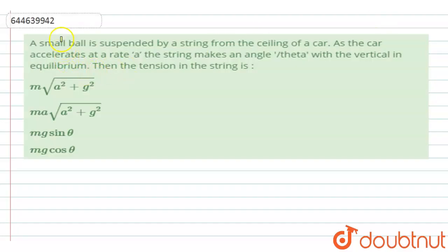The given question is: a small ball is suspended by a string from the ceiling of a car. As the car accelerates at a rate a, the string makes an angle theta with the vertical in equilibrium. Then the tension in the string is. We are having these options: m times root of a square plus g square, ma into root of a square plus g square, mg sin theta, or mg cos theta.